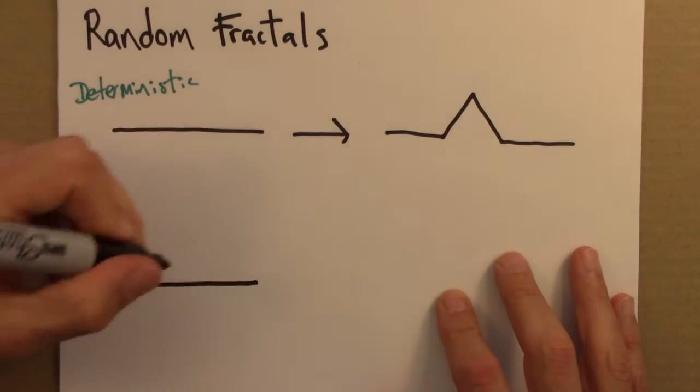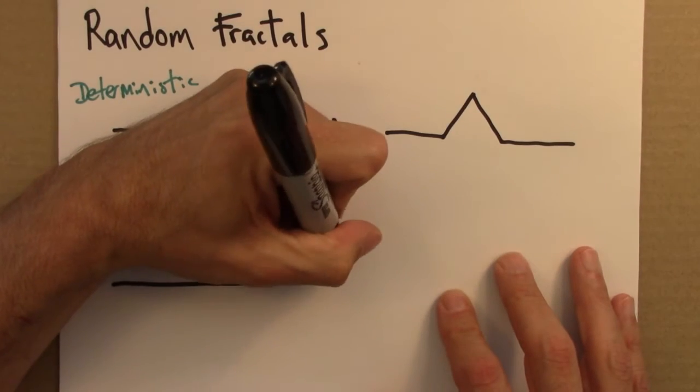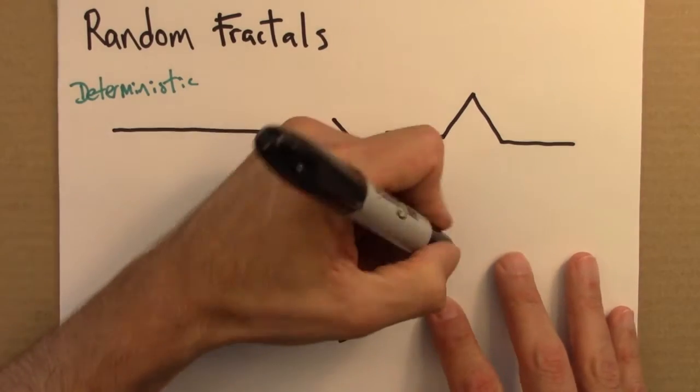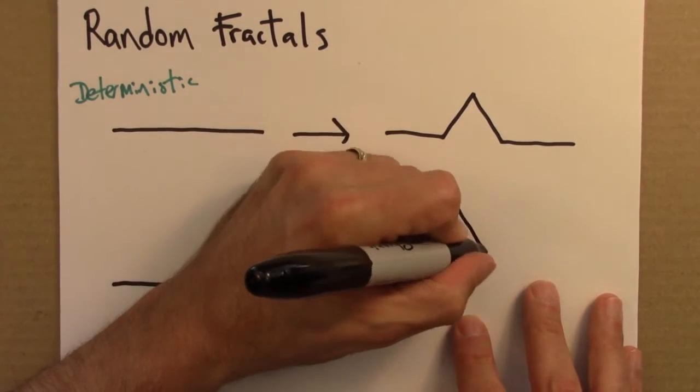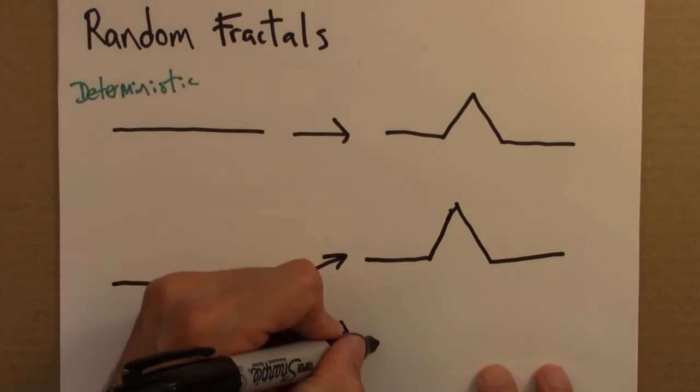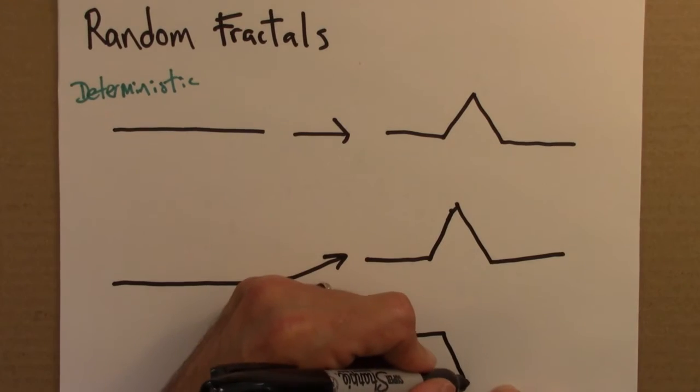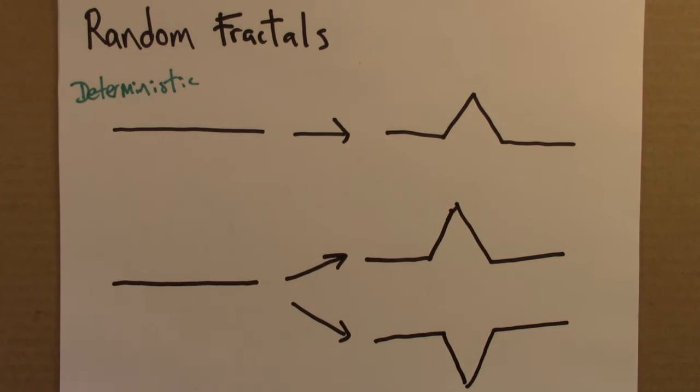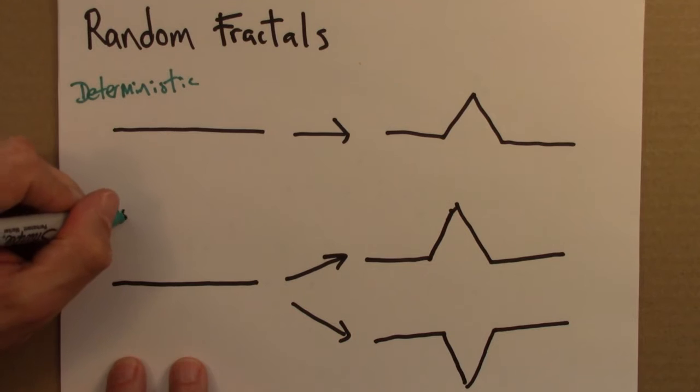So now we're going to imagine we have a line segment. But there are two possible rules. Sometimes we replace the line segment with a bent one like this. And other times we go down. So this, I would say, is a random rule. It's also sometimes called stochastic.